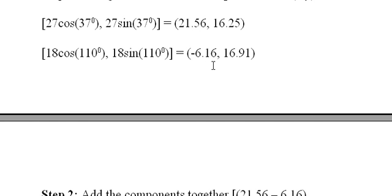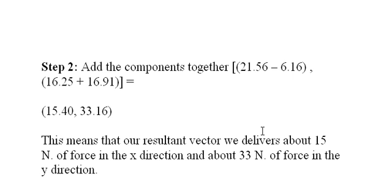We're adding this to this, which gives us the x coordinate of the resultant vector. If we add the two y values, we'll get the y coordinate of the resultant vector. So we end up with this vector of 15.4 and 33.16.